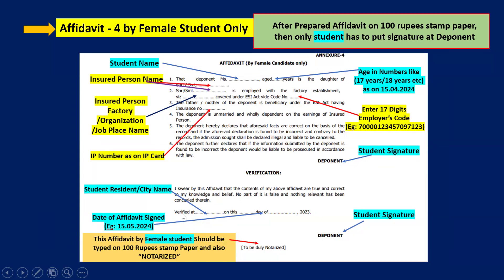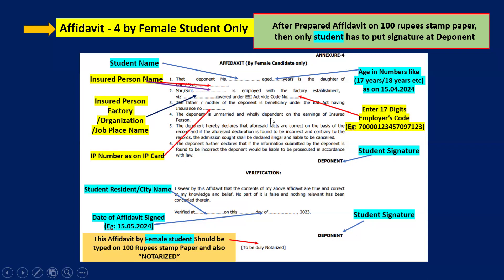In the verification section, write the student's resident or city name. Enter the date on which you are submitting the certificate. The student has to sign at the deponent places. This certificate for female students should be typed on a 100-rupee stamp paper and also notarized. Purchase a 100-rupee stamp paper at a register office, type this data on it on a single page, and the student has to sign at the two deponent places.